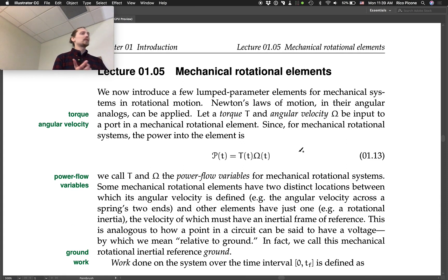We now introduce a few lumped parameter elements for mechanical systems in rotational motion. This is just one axis of rotation, not like tumbling and stuff.